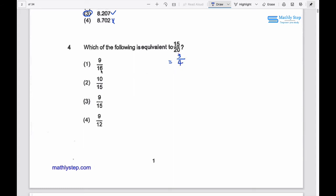So 3 over 4. 9 divided by 3 equals 3, 16 cannot divide by 3, so this is incorrect. This one divided by 5 is 2, and this one divided by 3 is 3. 9 divided by 3 is 3, 12 divided by 3 is 4. So this is the correct answer.